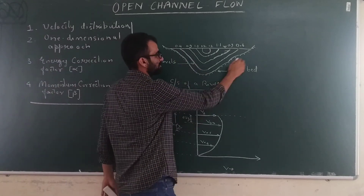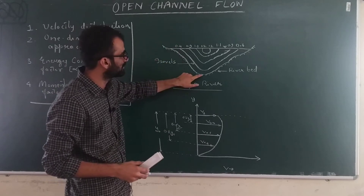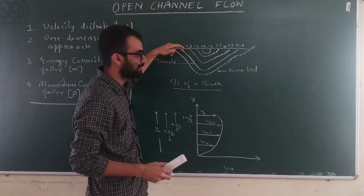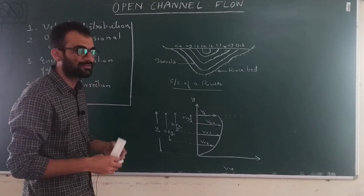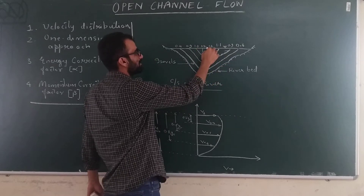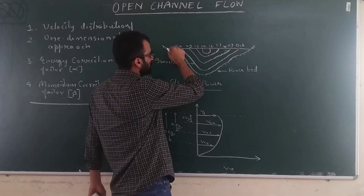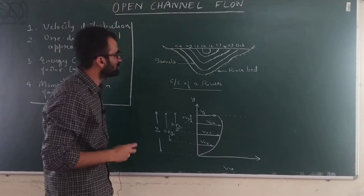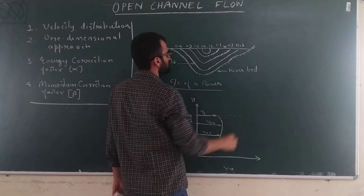If you have a natural cross-section — suppose you take a river, fix one cross-section there, and do a bathymetric survey — you measure the depth at all points along the cross-section. Then you go into the river with a current meter or an acoustic Doppler velocimeter and measure velocities at many locations along the depth and across the section. If you plot and join points of equal velocity, you get what are called isovels.